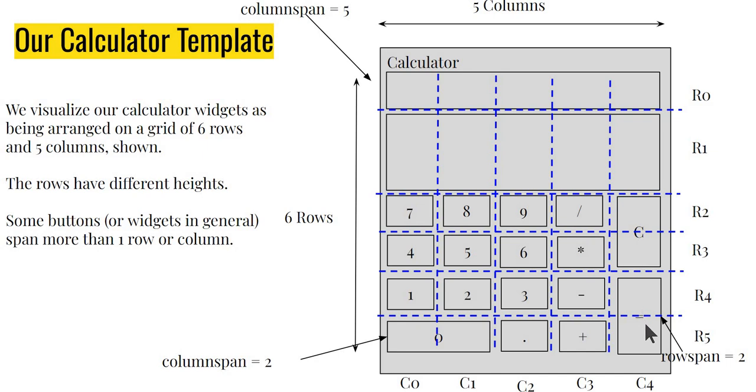For the C and equal to, I have a row span of two. For zero, I have a column span of two. So that's why you get this pretty nice looking interface created. Again, this is best done by doing.